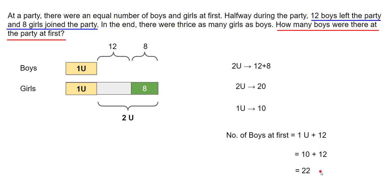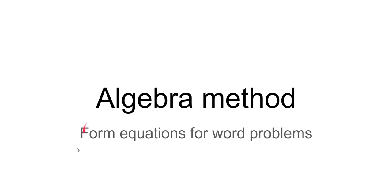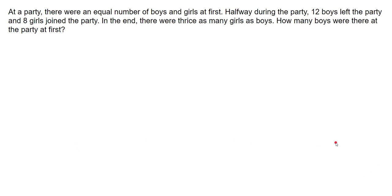This is a simple question to solve using the model method, and the model method makes it easy to solve this kind of problem. Now let's look at how to solve the same problem using algebra, and we'll also see how to form equations for word problems. To recap: at a party there were an equal number of boys and girls at first; halfway through, 12 boys left and 8 girls joined; in the end there were three times as many girls as boys. How many boys were there at first?